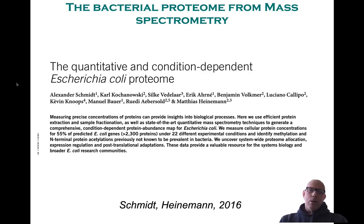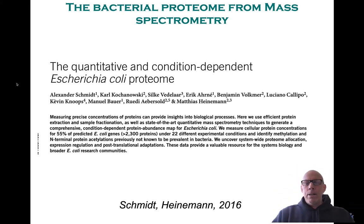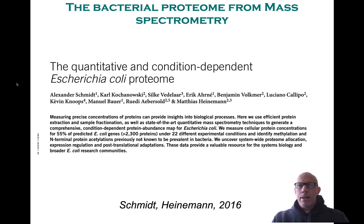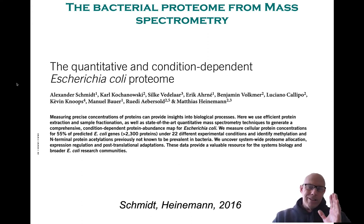A second methodology, quite distinct from ribosomal profiling, is the use of mass spectrometry. One of my favorite papers is by Schmidt and Heinemann, in which they used mass spec under 22 different experimental conditions. I like the analogy of using a drone to take pictures of Manhattan — one snapshot is fine, but if you did it on weekends, holidays, day and night, rush hour, and midday, you'd learn a lot more. So looking at all these different growth conditions is extremely important.